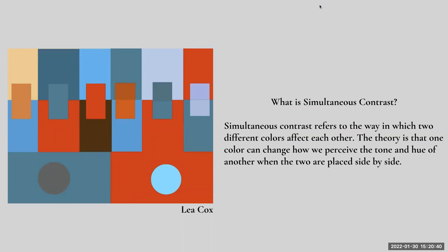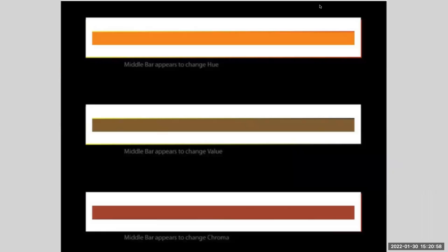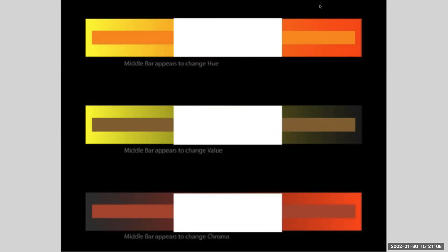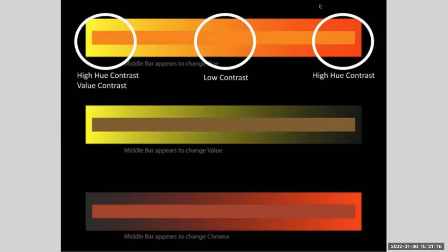Simultaneous contrast refers to the way in which two different colors affect each other. The theory is that one color can change how we perceive the tone and hue of another color when the two colors are placed side by side. The middle bar in each of these examples is the exact same hue. When a gradient that shifts in chroma or value is placed alongside it, it makes the color appear a different hue.